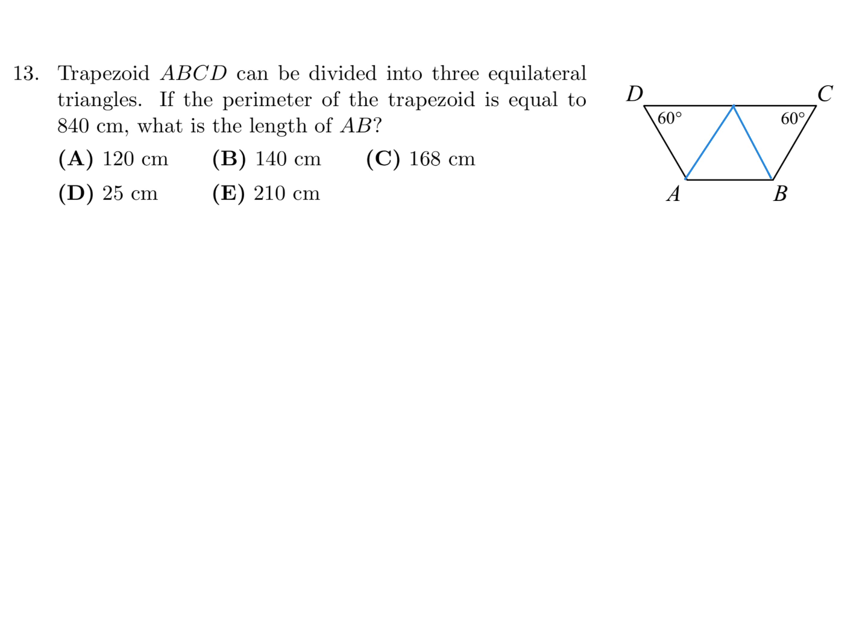So then, let's see here. Perimeter is 840. So first, let me just label this. Since they're equilateral, all the sides would be the same. So I'll just call all the sides X. So it looks to me like 1, 2, 3, 4, 5. So there's 5 X's that would make up the perimeter, and they're saying that it's 840. So if you divide through by 5, we would get 84 times 2 which is 168. So the length of A to B is really just X, which is 168. So I think that's it. Number 13 is C.